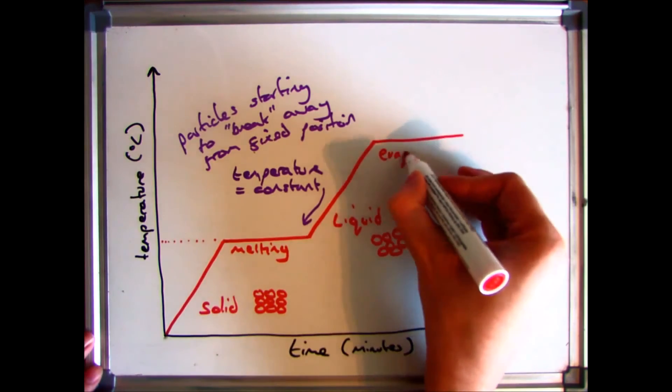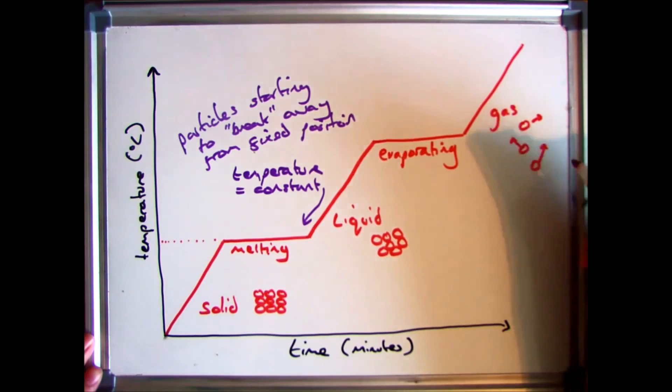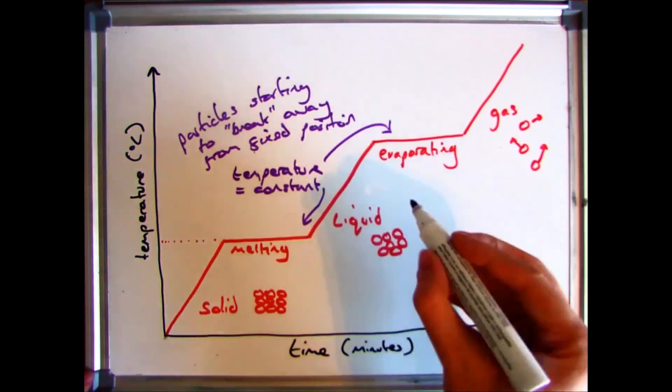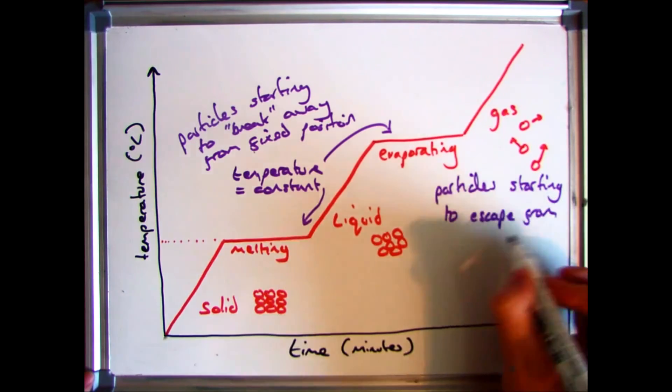The same thing will happen when you turn it from a liquid into a gas. The temperature will increase to the point where it evaporates, where the temperature will stop increasing. That energy is now being used to break it away from the liquid so the particles can go off into the air.